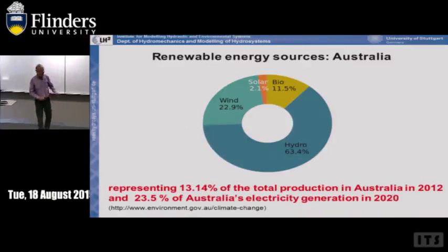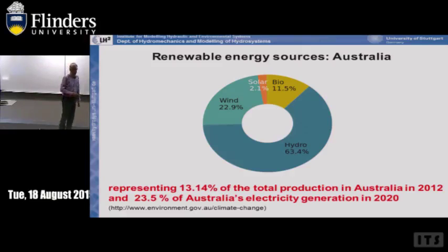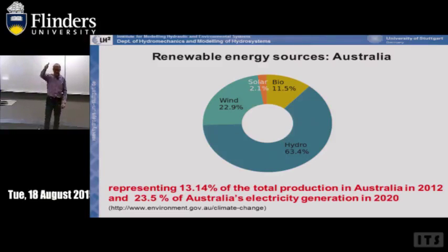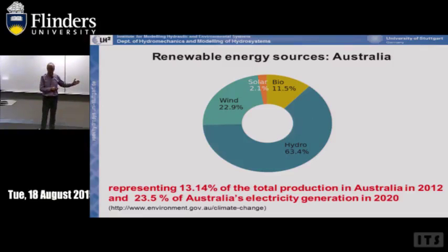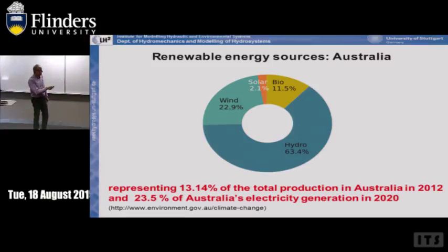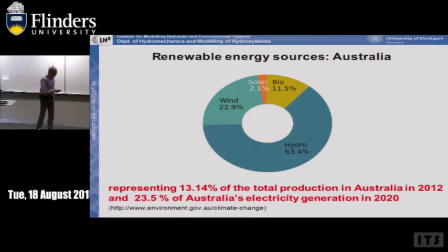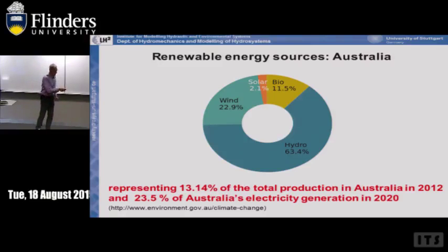Germany also decided to shut down all brown coal and dirty coal power plants by 2025 — that's the reason why they need such large amounts of renewable energy. For Australia, from the website, you get approximately 65% from hydropower, 22-23% from wind, a little from solar despite having so much sun, and 11% from bio. The conclusion is that we can only increase sources from solar and wind — these are the two main sources.